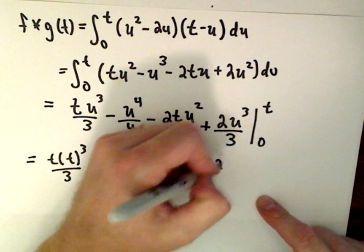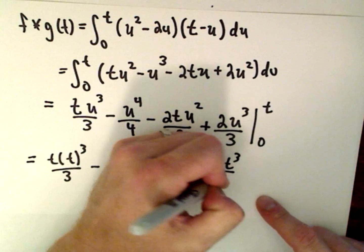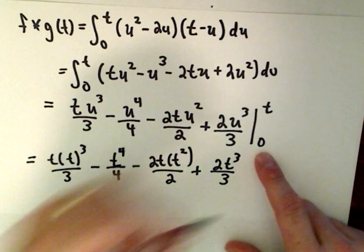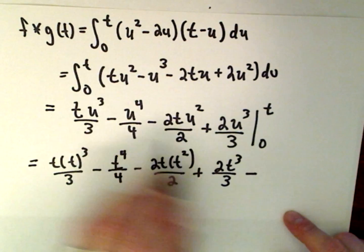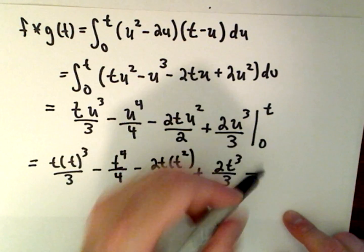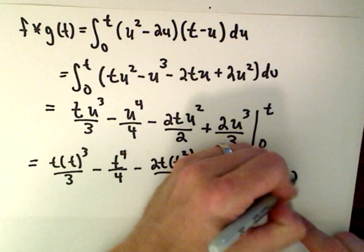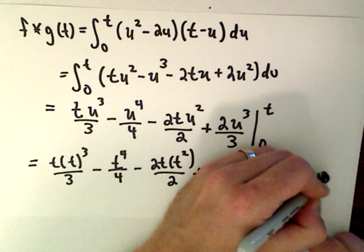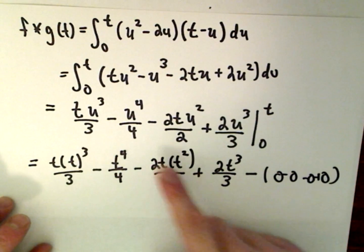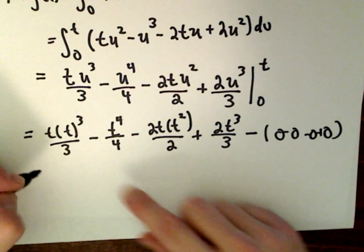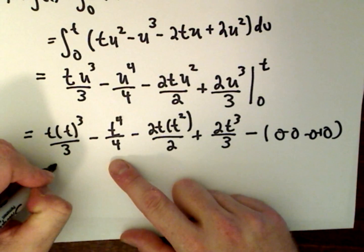Notice when we substitute in the lower limit of integration, when we plug in 0 for all of the u's, we'll just end up with 0 minus 0 minus 0 plus 0. So in this case the lower limit of integration will just turn into a bunch of zeros.